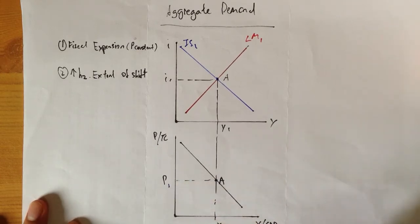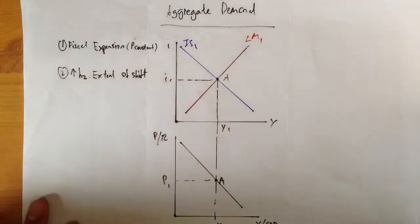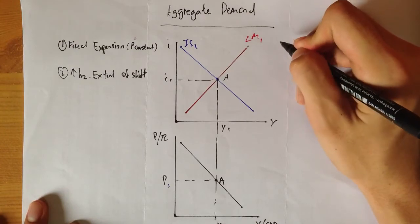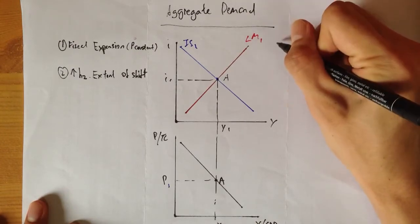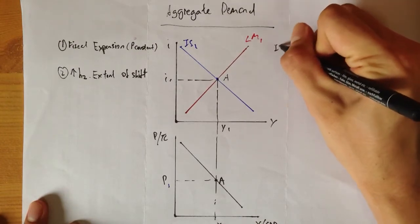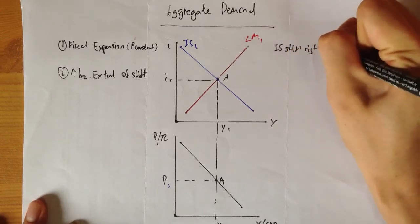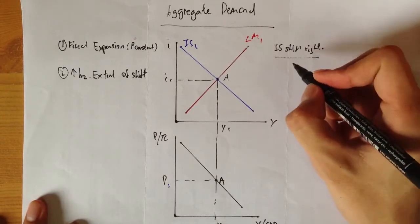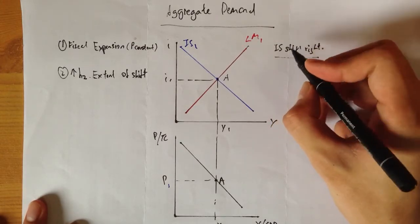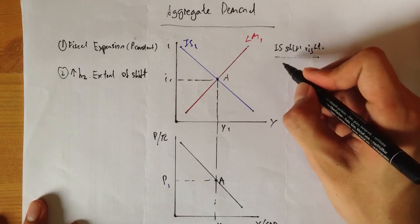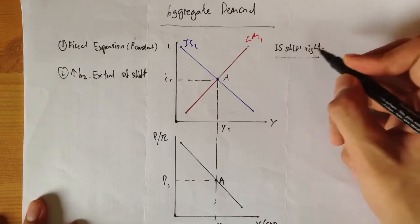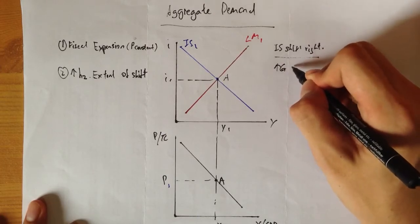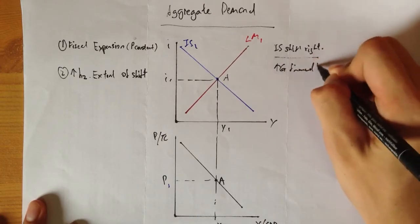We know that a fiscal expansion is going to cause a rightward shift for IS. Under this assumption, we're going to use that the government is running a balanced budget policy, where a rise in government spending is financed by taxes.